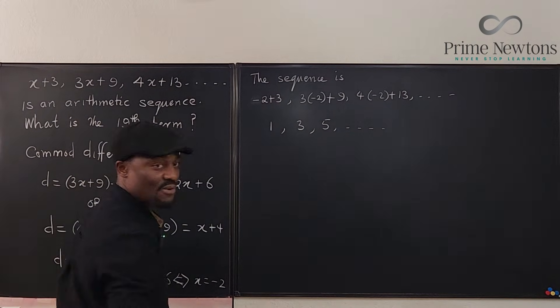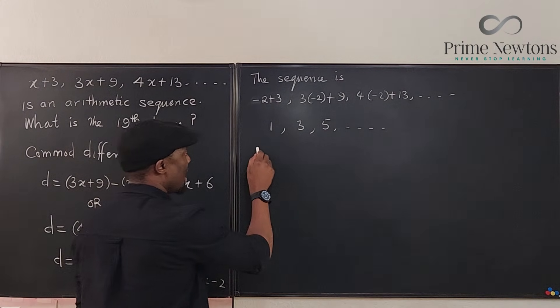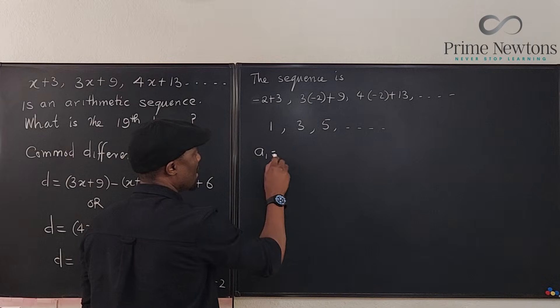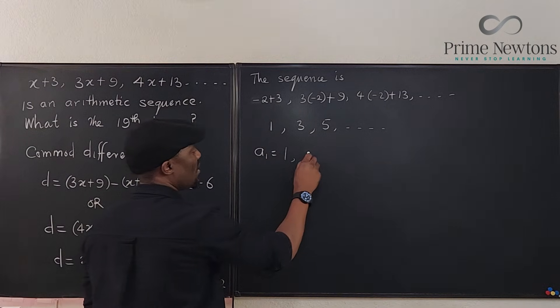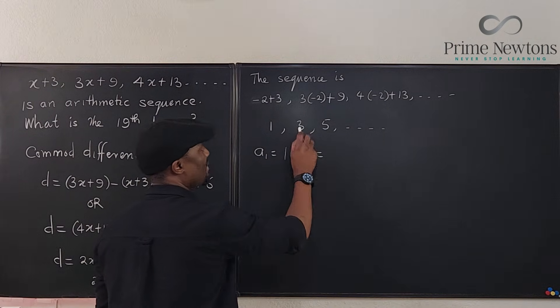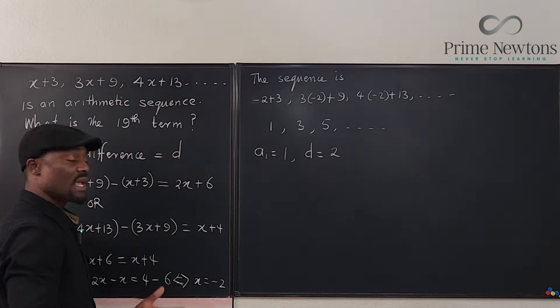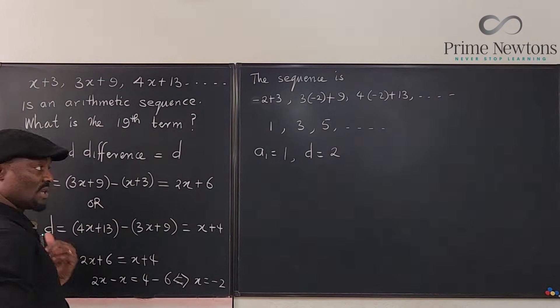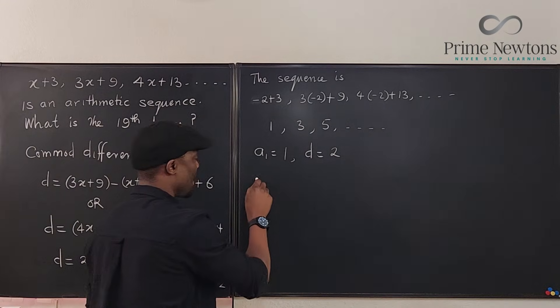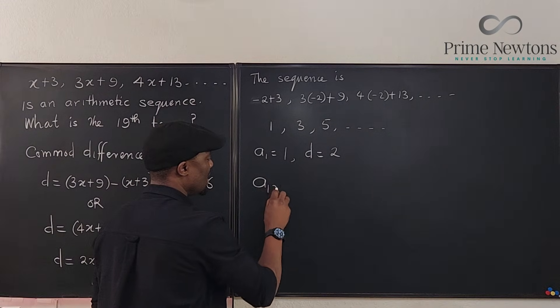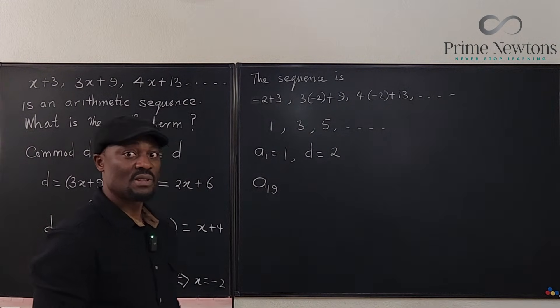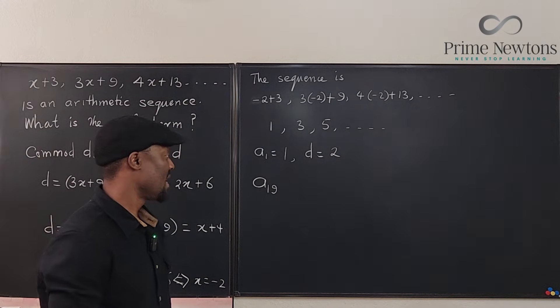So now that we have the sequence, we know that a sub 1 equals 1, the first term. The common difference equals 5 minus 3 which is equal to 2. We can go here and plug it in. Negative 2 plus 4 is going to give you 2, which is the common difference. And now we can find a sub 19, which is the 19th term, using the formula for an arithmetic sequence.